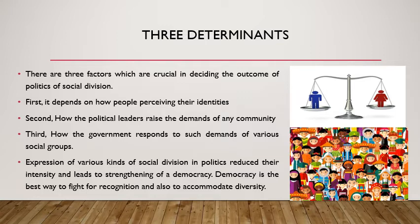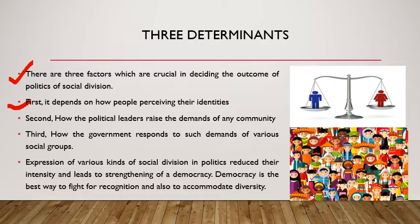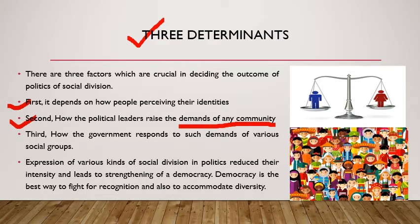There are three determinants important to understanding the politics of social division. First, it depends on how political leaders raise the demands of any community. The outcome of politics of social division depends on how political leaders raise the demands of different social groups. It is easier to accommodate demands that fall within the constitutional framework and are not at the cost of another community. For example, the demand for only Sinhala in Sri Lanka was at the cost of the Tamil community's interests and identity and could not be accommodated within a single framework.